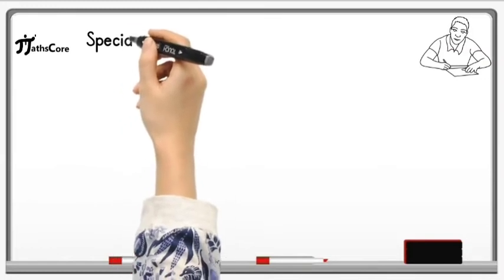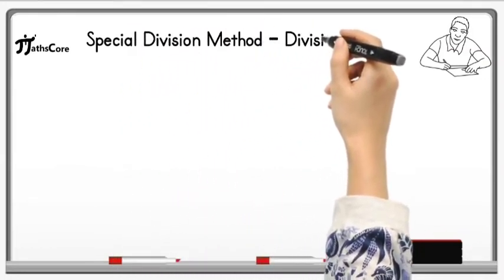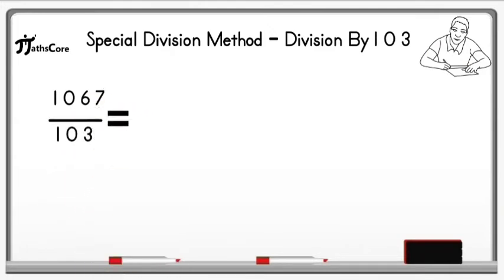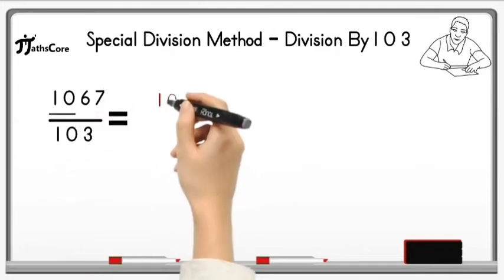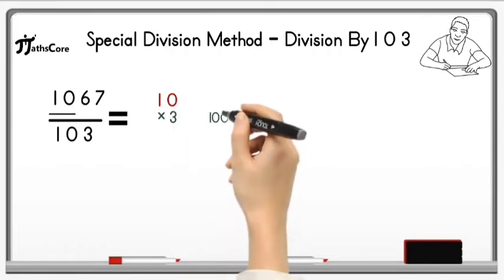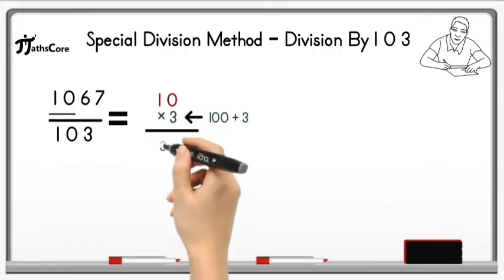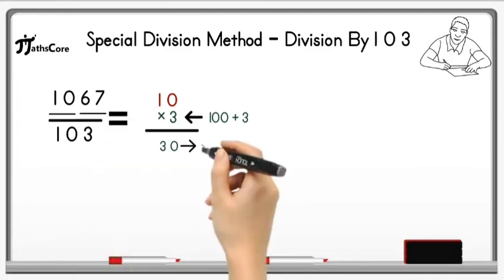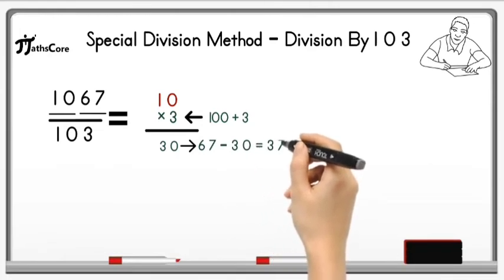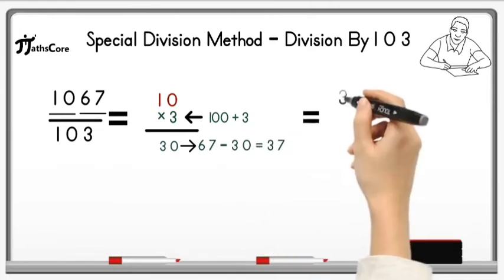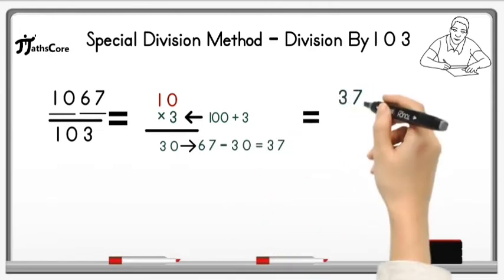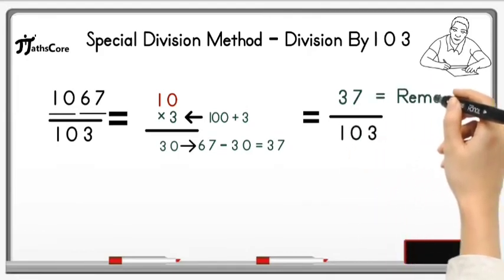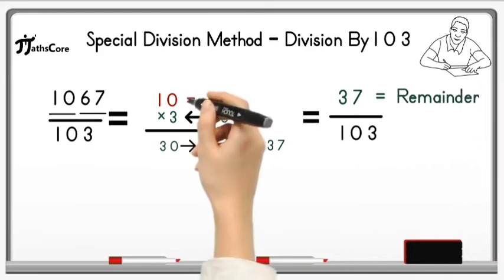Let's solve some examples on division by 103. The first example is 1067 divided by 103. Write down 10 here and multiply it by 3, because if we add 3 to 100 we get 103. 10 multiplied by 3 is equal to 30. Now subtract this 30 from 67: 67 minus 30 is equal to 37. Divide 37 by 103 — it is not possible because 37 is less than 103. So 37 is the remainder and 10 is the quotient.